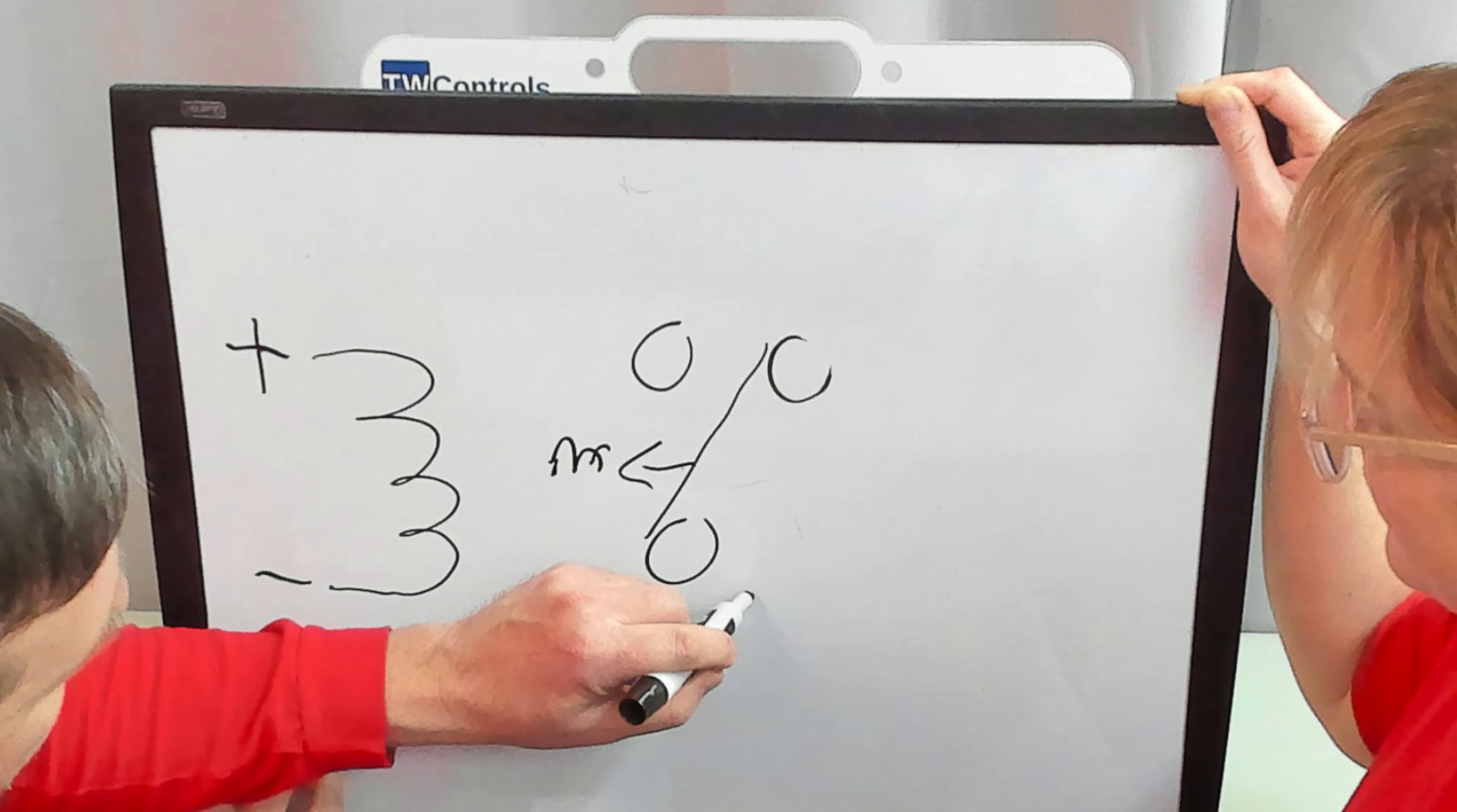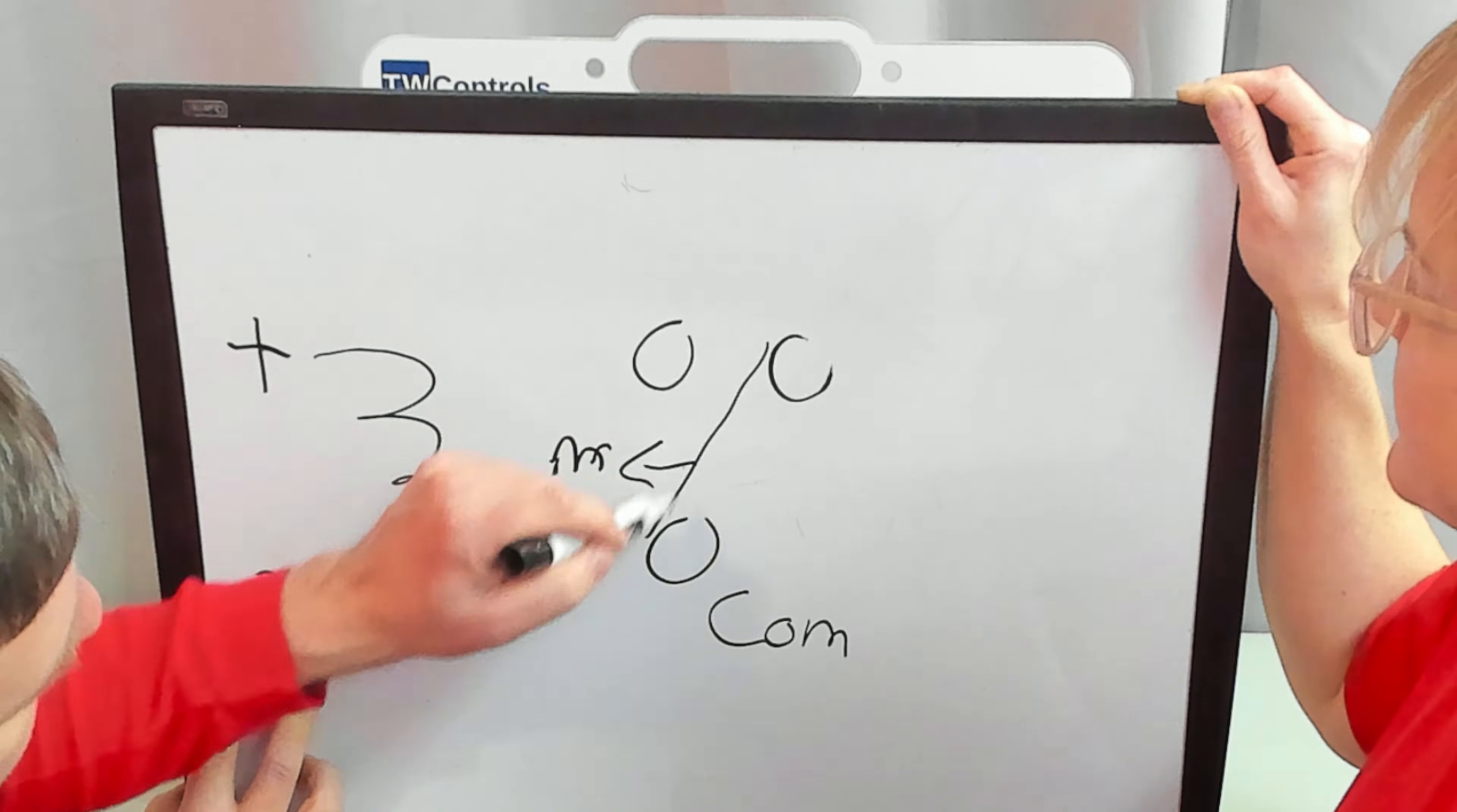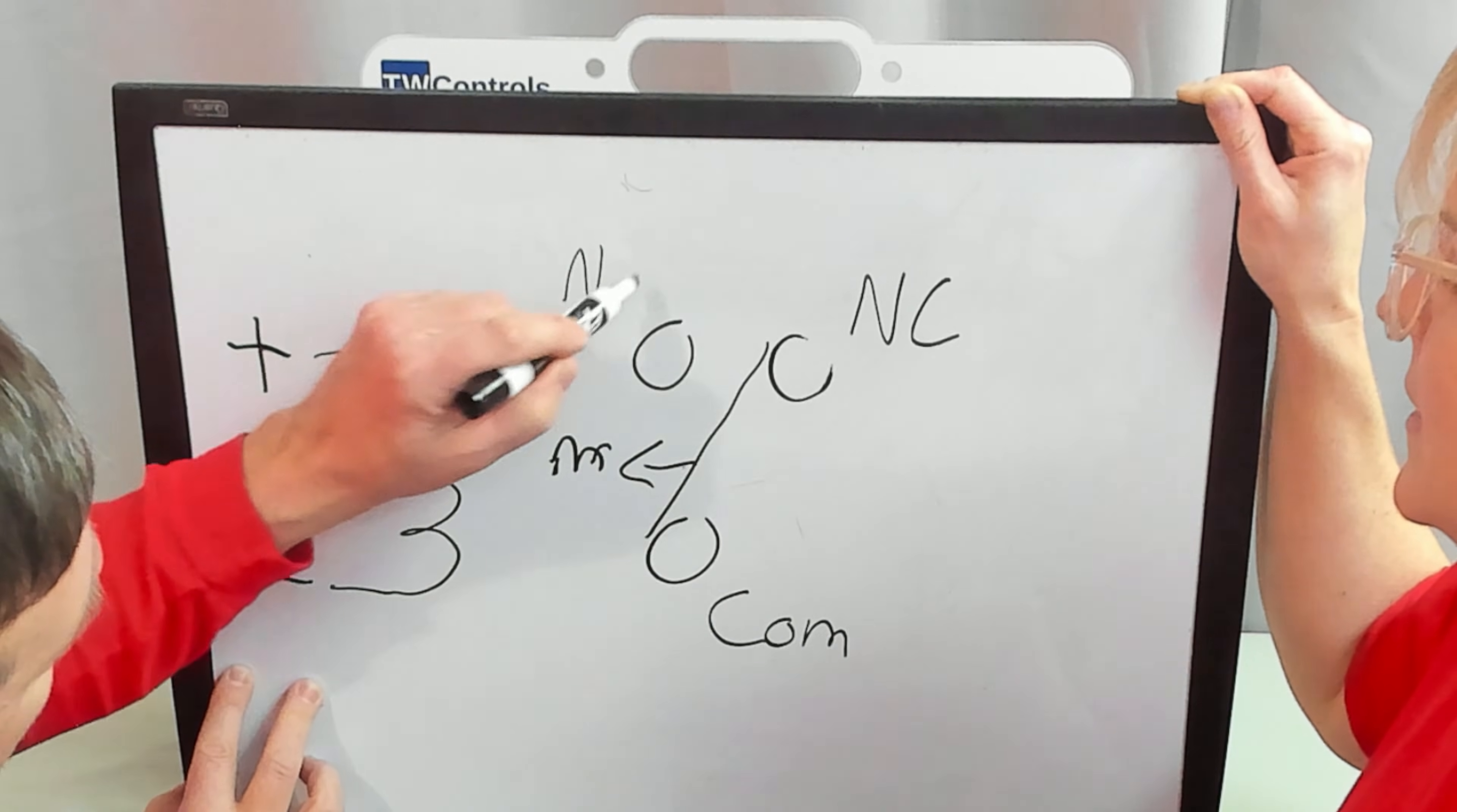So in this relay arrangement, the common is the one that both contacts can touch. The one that's normally touched is our normally closed. And the one that's normally not will be the normally open.